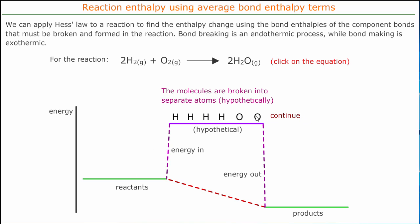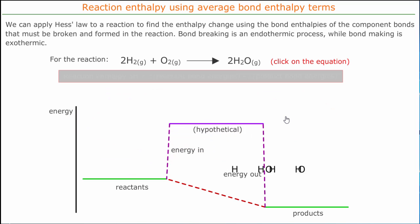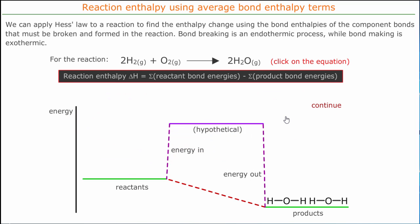Then the atoms, all separate, can join together. The joining together — the making of bonds — is an exothermic process. So the chemical reaction continues and we have two water molecules.